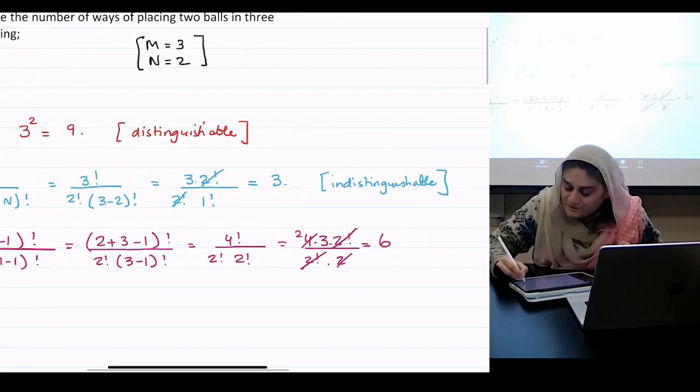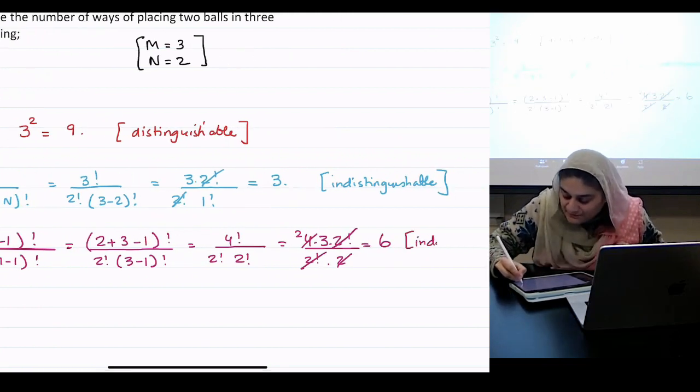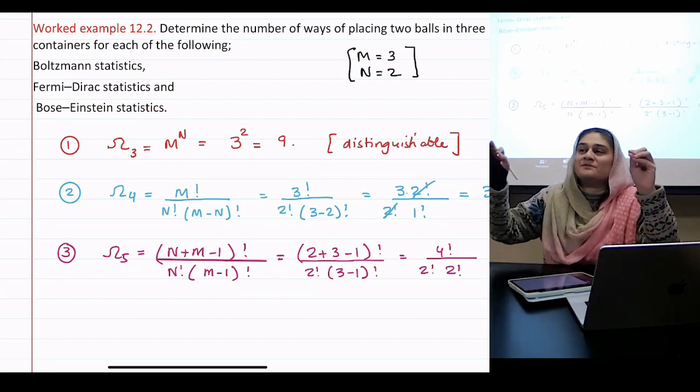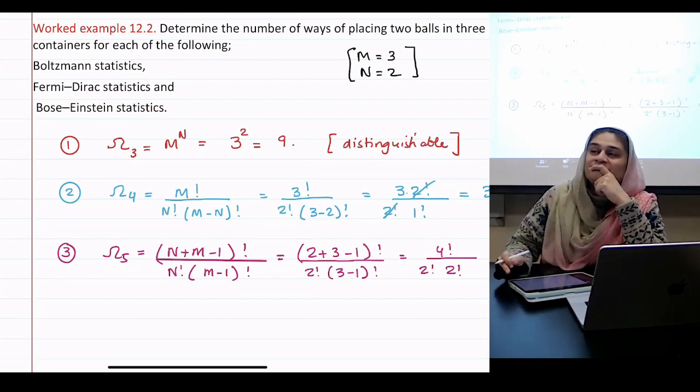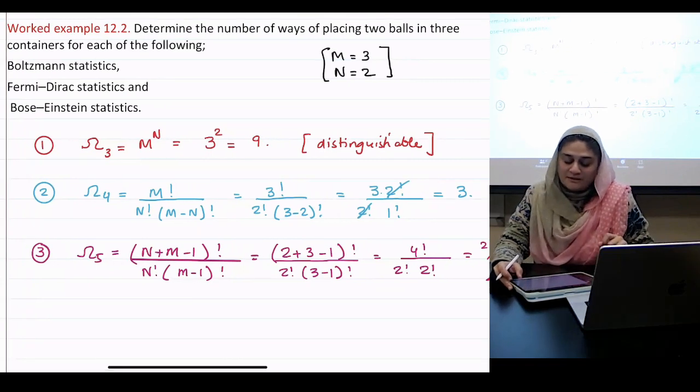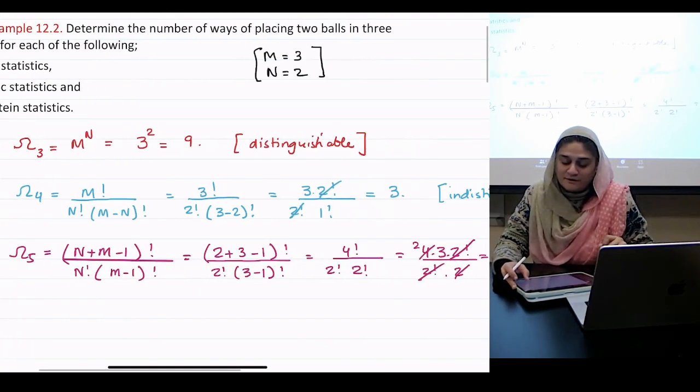And remember, this is also indistinguishable. How many ways to fill those three boxes? Nine. How many ways to fill for Fermi-Dirac? Three. And how many to fill for Bose-Einstein? Six.